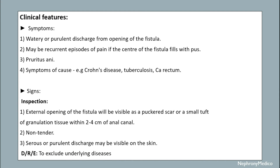Clinical features: Symptoms include watery or purulent discharge from the external opening of the fistula, and there may be recurrent episodes of pain when the center of the fistula fills with pus. Pruritus ani and symptoms of an underlying cause such as Crohn's disease or tuberculosis may be seen. Signs on inspection include a visible external opening as a puckered scar or small tuft of granulation tissue within 2 to 4 cm of the anal canal.